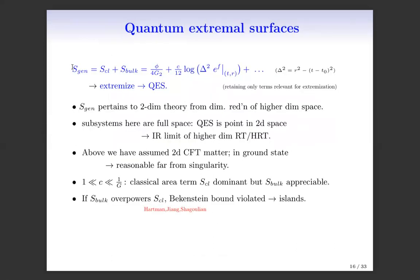The generalized entropy has a classical area piece and a bulk matter entropy S_bulk. The spacetime interval appears as delta-squared. This overall object is extremized to find the quantum extremal surface. The regime of validity requires the central charge c of the two-dimensional CFT to be much greater than one but much less than 1/G. This means the classical area term dominates, but S_bulk is appreciable. If S_bulk overpowers the classical entangling term, the Bekenstein bound is violated, leading to what have been called islands in the recent literature, following Hartman et al.